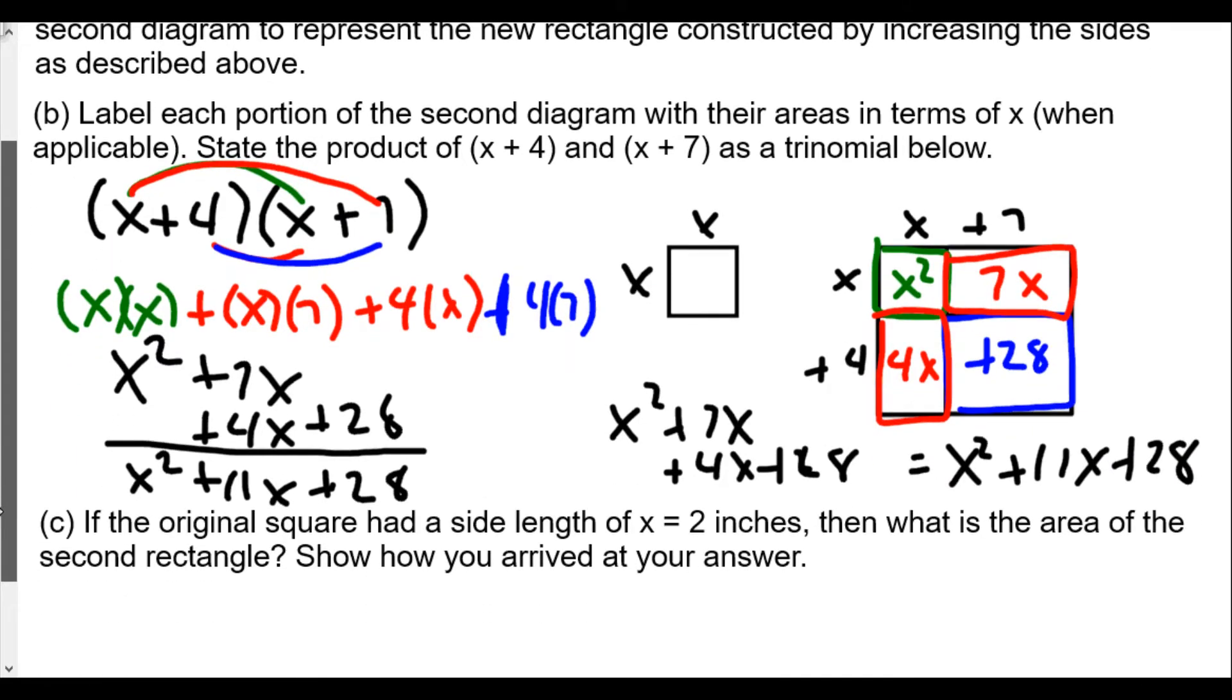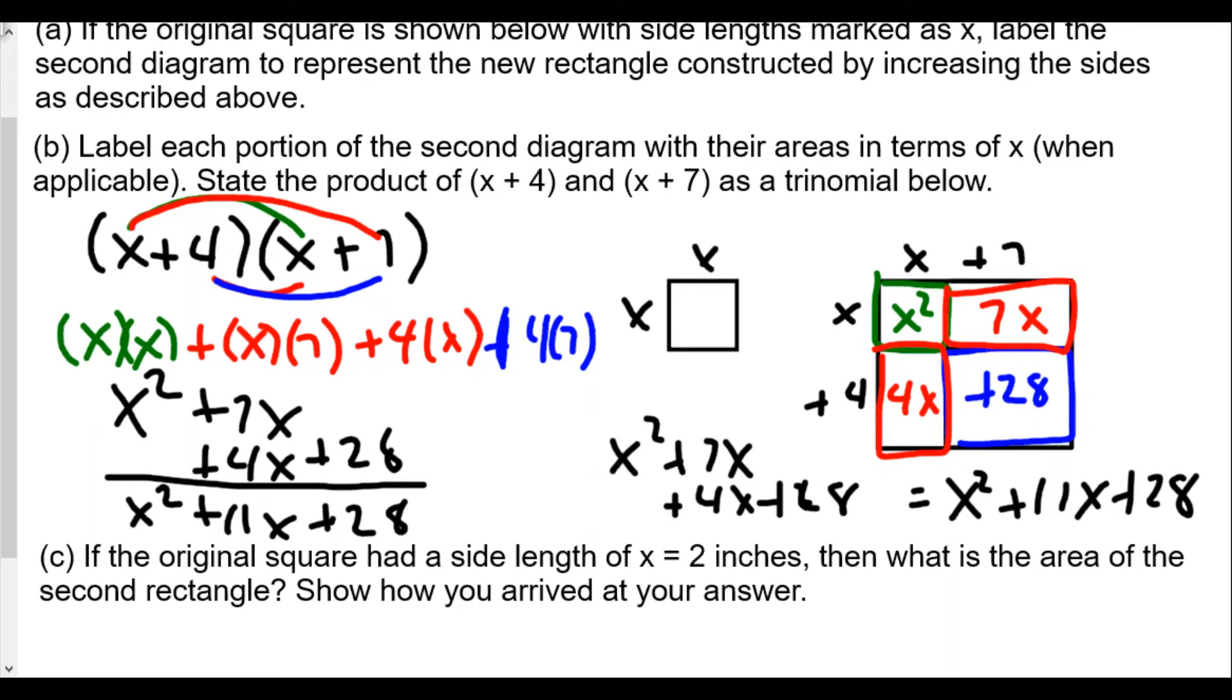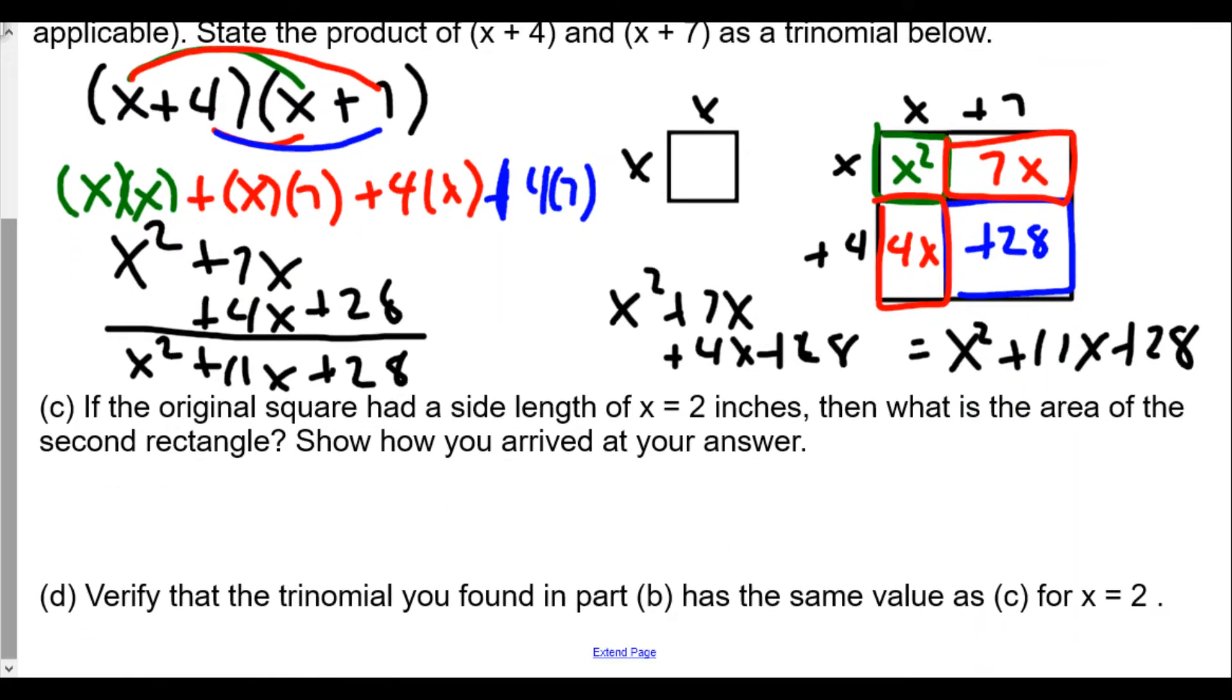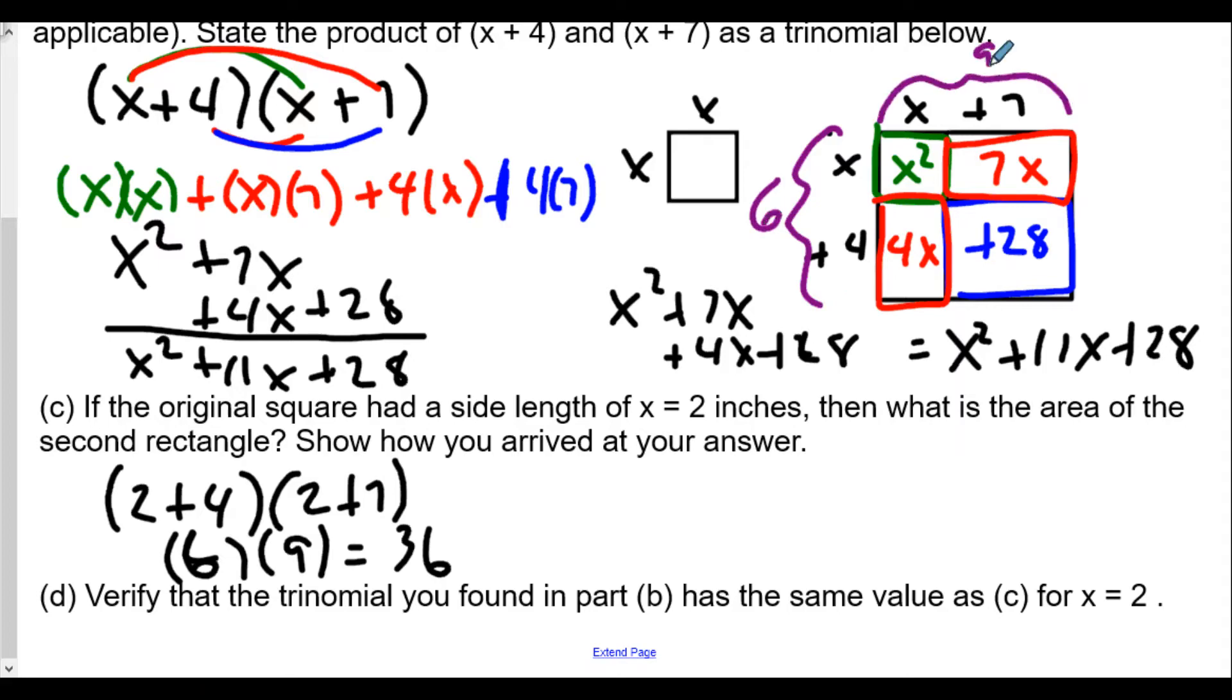Now, part C of this video, I want to see this question in the video, if the original square had a side length of x equals 2 inches, then what is the area of the second rectangle, meaning the entire binomial, well, let's do this from a point of view of just, in this case, replacing the 2 for x in our expression, so we would have 2 plus 4 times 2 plus 7, so we have 6 times 9 is going to be 36, all right, in the same way, if we were to do this by substituting in the 2, we would get, this would be 6, this would be 9, all right, and we would get,